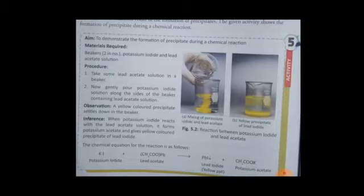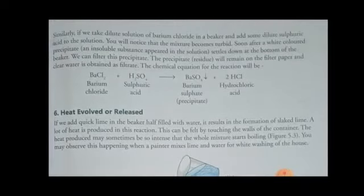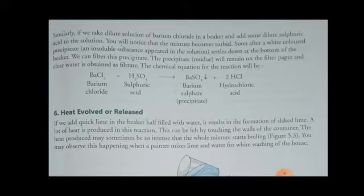This also signals that a chemical reaction has taken place. Whenever you add two liquids and get a solid precipitate, you can be sure a chemical reaction has occurred. Similarly, if we take a dilute solution of barium chloride in a beaker and add some dilute sulfuric acid, the mixture becomes turbid and a white colored precipitate — an insoluble substance — appears and settles at the bottom of the beaker. We can filter this precipitate; it remains on the filter paper and clear water is obtained as filtrate.